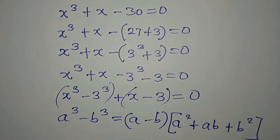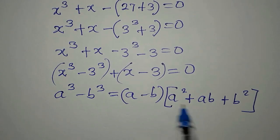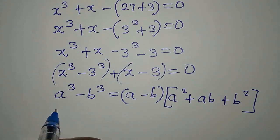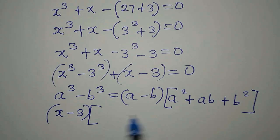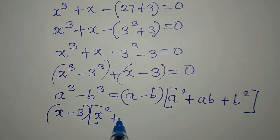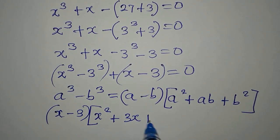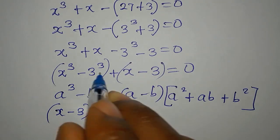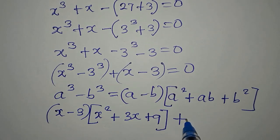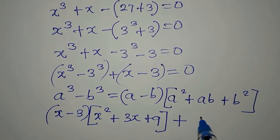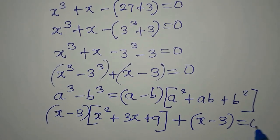I'm going to apply that same formula here. Our a minus b is x minus 3. Then a squared is x squared, ab is x times 3 which is 3x, plus b squared which is 3 squared equalling 9. We close this bracket, then plus x minus 3, and this all equates to zero.